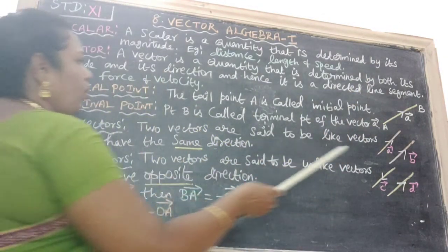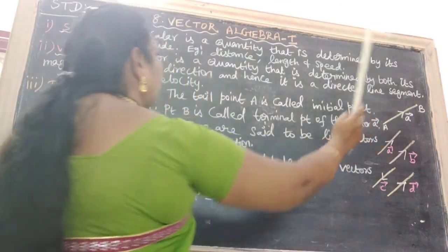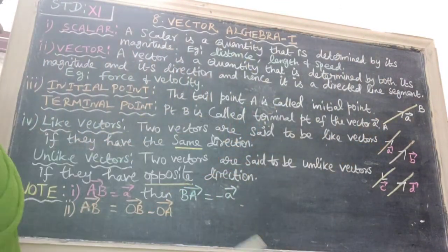Next one is terminal point. The point capital B is called the terminal point of vector A vector.